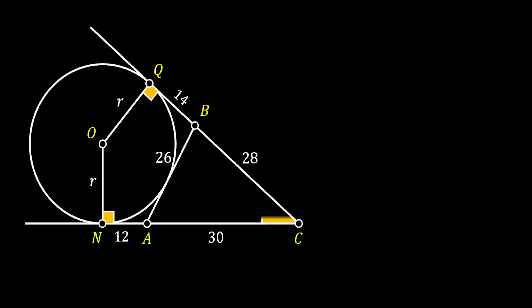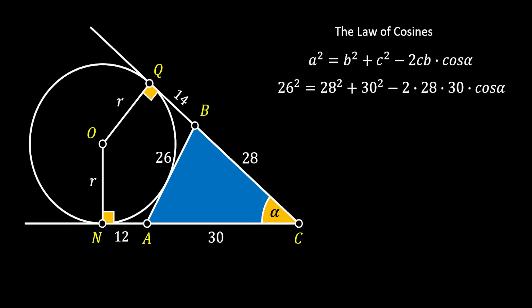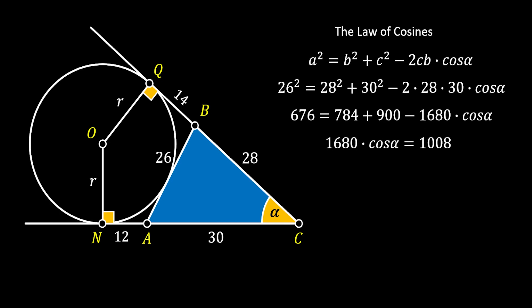Let's label the angle at point C as alpha. Using the law of cosines on side AB, which equals 26, the square of AB equals the sum of the squares of the other two sides minus 2 times their product times cosine of the opposite angle. Substituting and simplifying, we get that cosine of alpha equals 1008 over 1680.